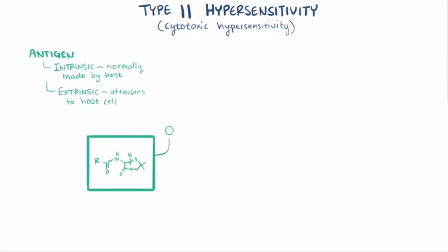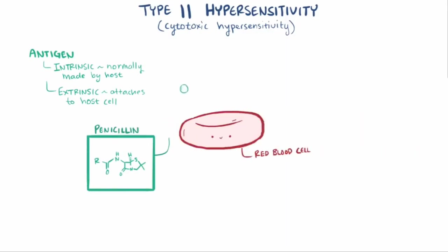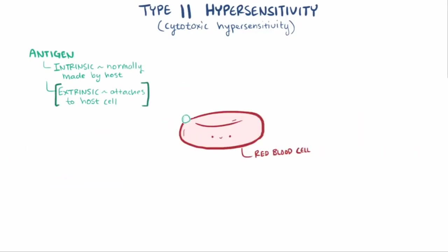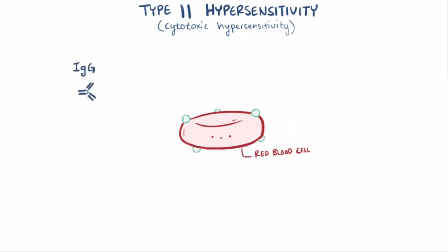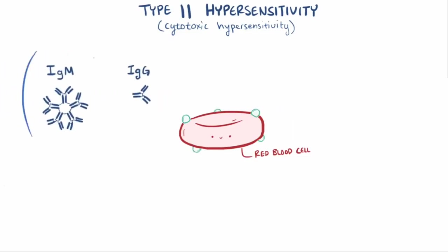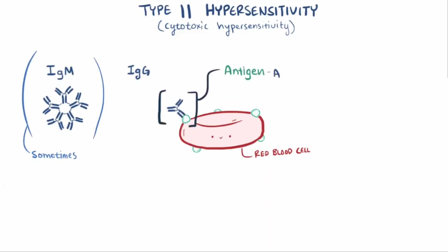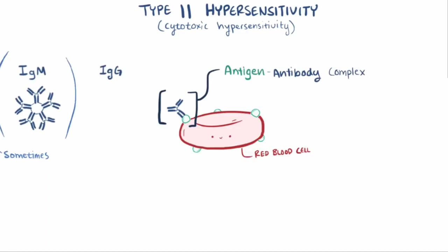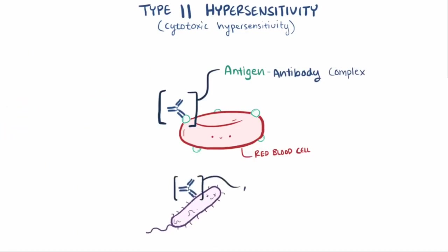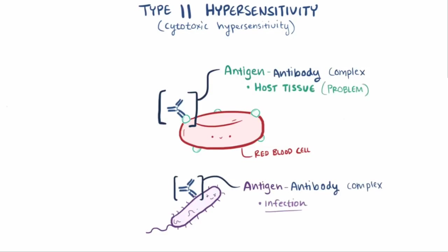Let's say a drug like penicillin binds to a red blood cell — it becomes an extrinsic antigen. An IgG, or more rarely an IgM antibody, that's penicillin-specific might bind to the penicillin molecule, creating an antigen-antibody complex. It's worth mentioning that antigen-antibody complexes can happen in the course of a normal infection, but it's when an antibody is complexed to host tissue that things start to become a problem.